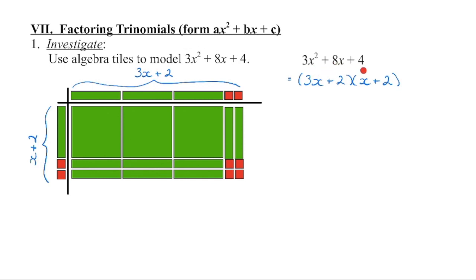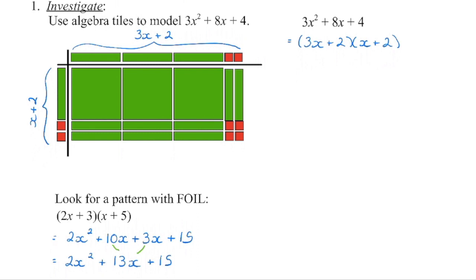So we multiply the first terms to get back to that 3x squared. The outside product of 6x plus the inside product of 2x combines to give us the 8x, and the last terms 2 times 2 give us that 4. When we simplify a polynomial, we remove the brackets. If we are multiplying two binomials together, we use the process of foiling.